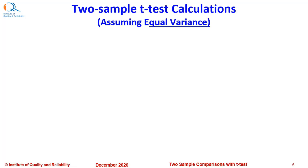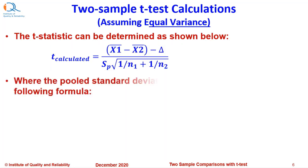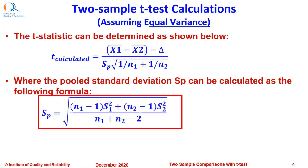Let us see how to perform two sample t-test calculations assuming equal variance. The t statistic can be calculated as shown below: t-calculated equals in the numerator the difference between the two sample averages x1 bar minus x2 bar minus delta, the difference that we want to test, divided by s pooled, that is sp, into square root of 1 upon sample size n1 plus 1 upon sample size n2. Where the pooled standard deviation sp can be calculated by using the following formula. The sp is square root of n1 minus 1 times s1 square plus n2 minus 1 times s2 square divided by the total degrees of freedom n1 plus n2 minus 2.